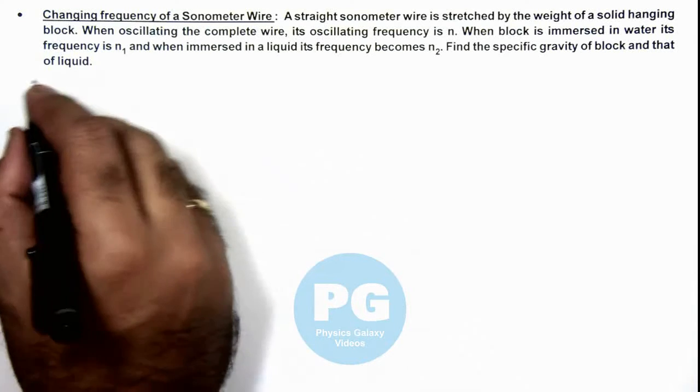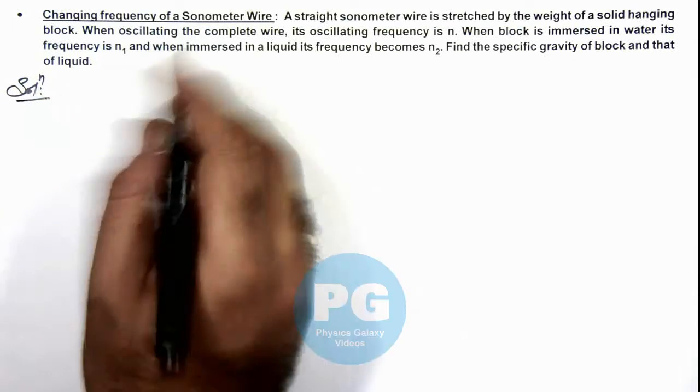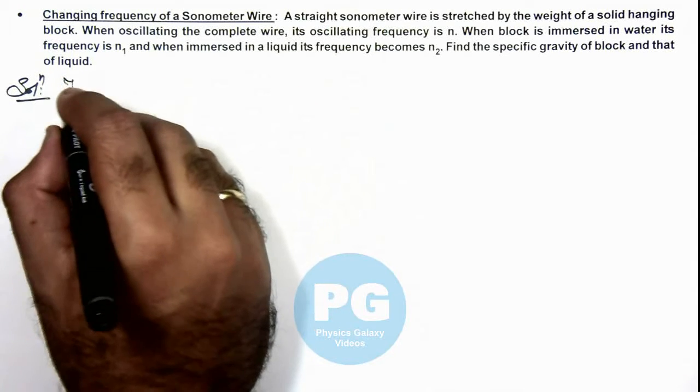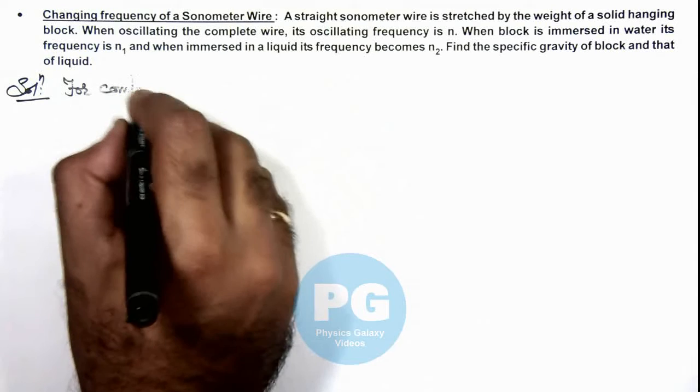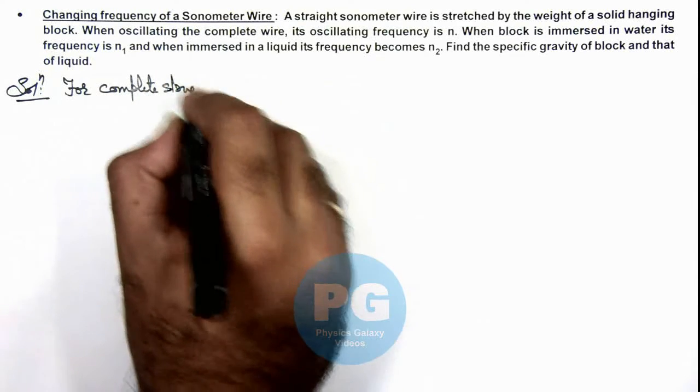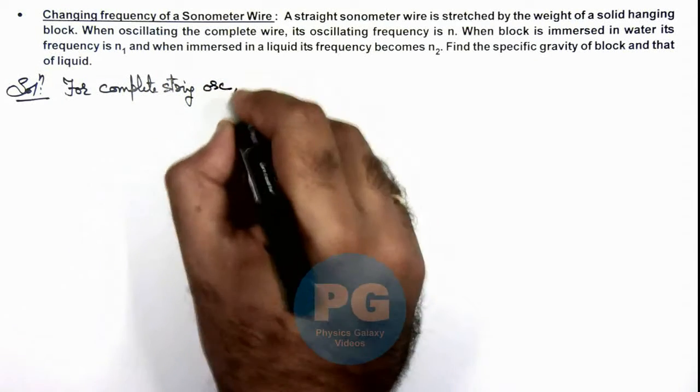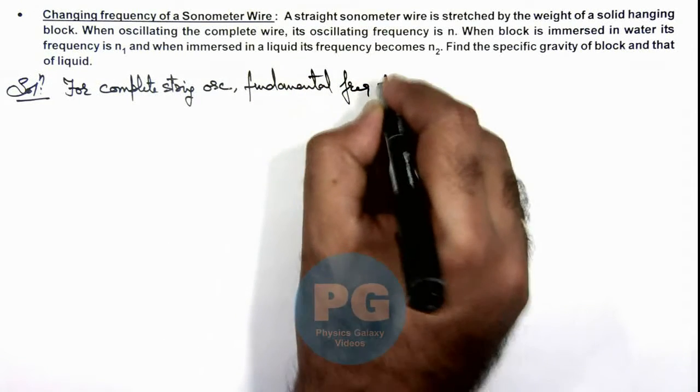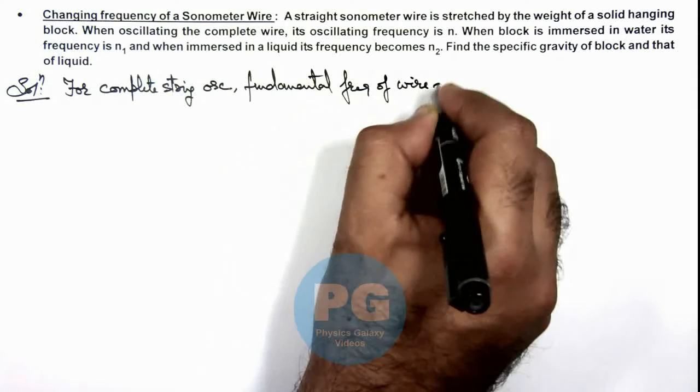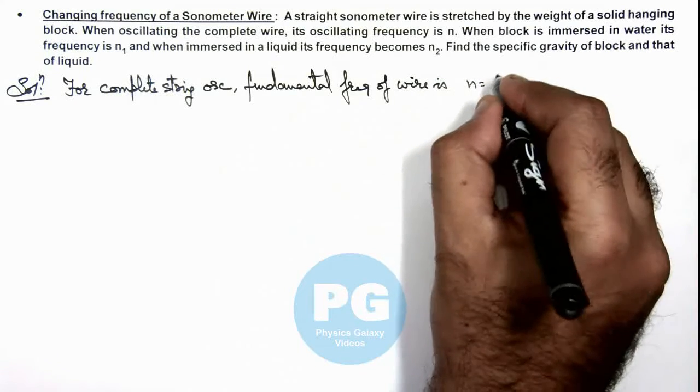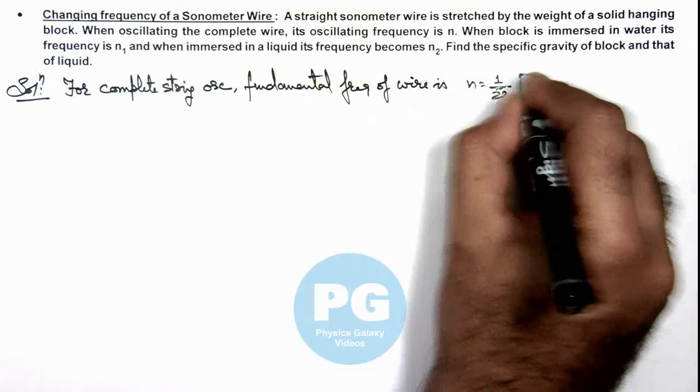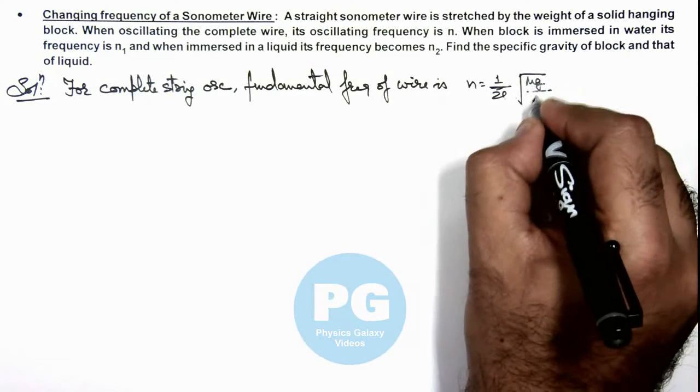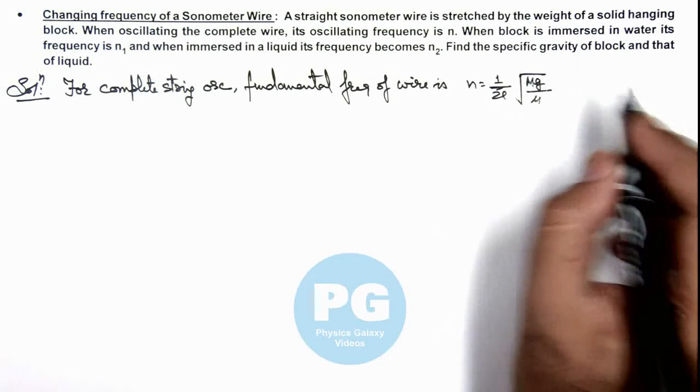Now in this situation, when a sonometer wire oscillates completely, we can write the fundamental frequency of the wire as n = (1/2l)√(T/μ), where the tension in the string is T = mg, and μ is the mass per unit length of the string.